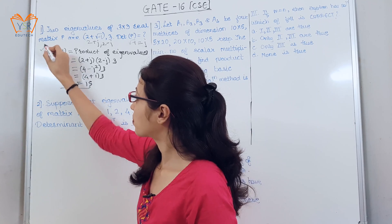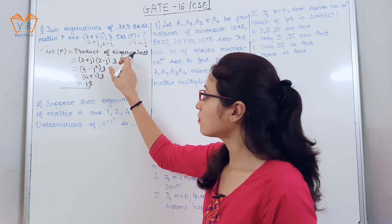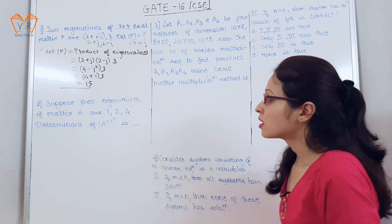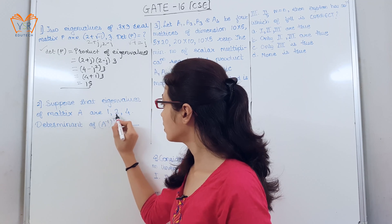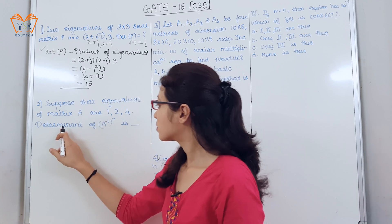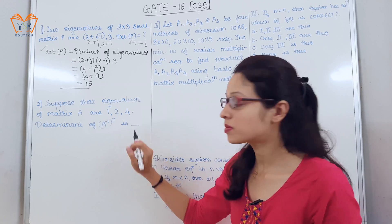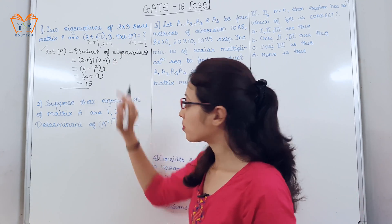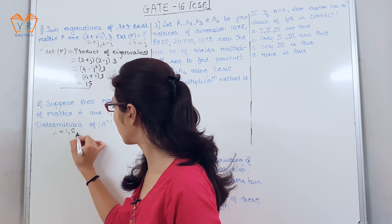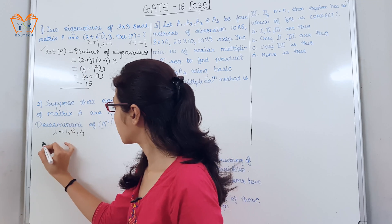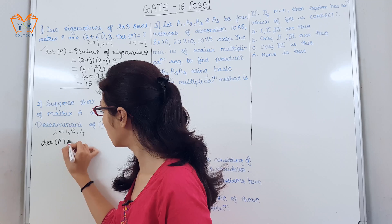Please remember this property: the determinant of any matrix is the product of its eigenvalues. The second example: suppose the eigenvalues of matrix A are 1, 2, and 4. Find the determinant of A inverse transpose. Using the same property, the determinant of A equals 1 × 2 × 4 = 8.